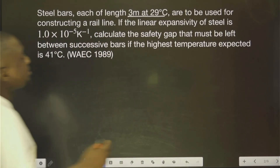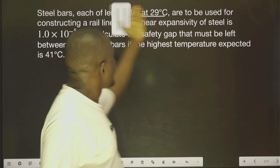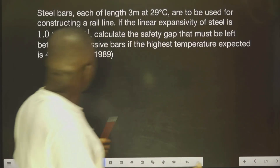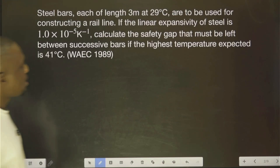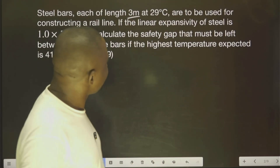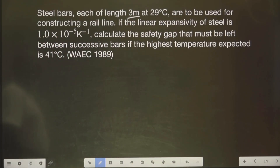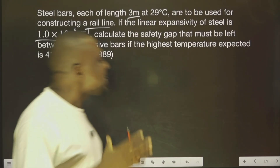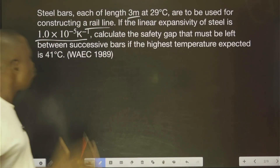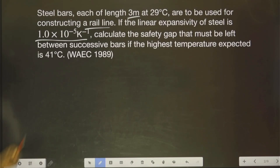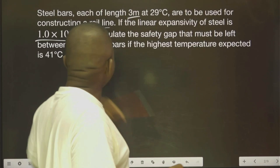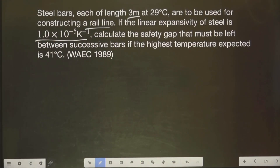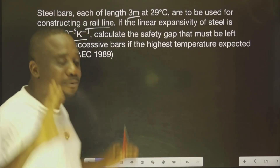So the question is saying: as an engineer working with a construction company, you have steel bars. Each of these at this temperature are to be used to construct a rail. If the linear expansivity of steel is given, calculate the safety gap that must be left between successive bars if the highest temperature expected is 41 degrees centigrade. The first thing you need to do is recall the formula of linear expansivity.